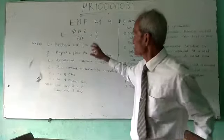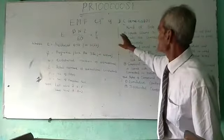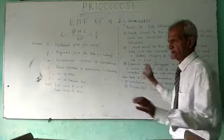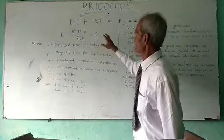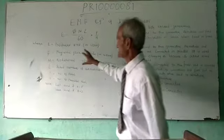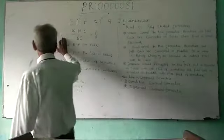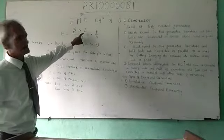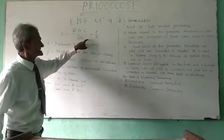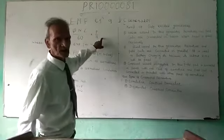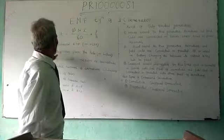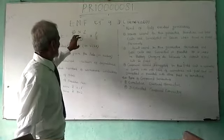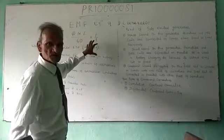The electromotive force equation of a DC generator is given by E equals phi N Z by 60 into P by A, where all the symbols have their usual meanings.